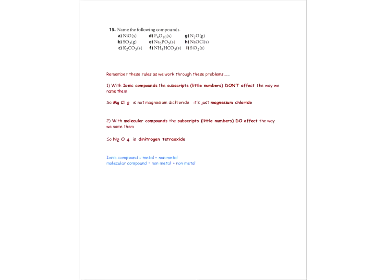This question asks us to name different sorts of compounds. Some have elements, some have polyatomic ions, some have a combination. NH3 is ammonia, and it's ammonium when it's NH4+. Now, with ionic compounds, subscripts or little numbers don't affect the way we name them. So with MgCl2, it's not magnesium dichloride — it's just magnesium chloride, because it's an ionic compound.